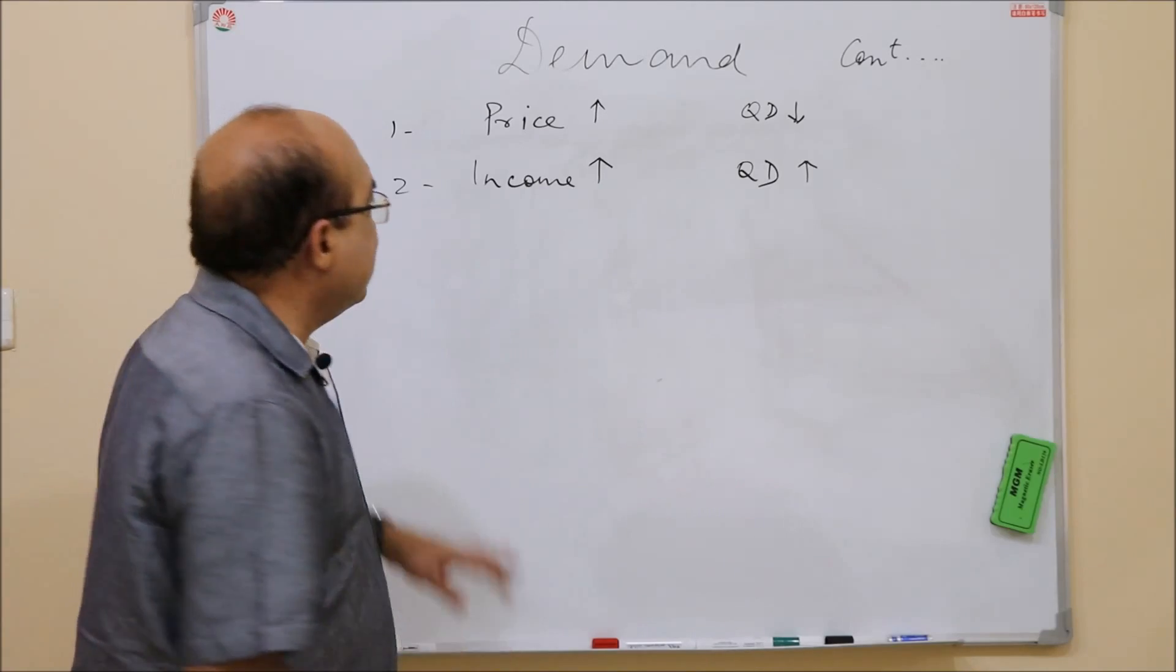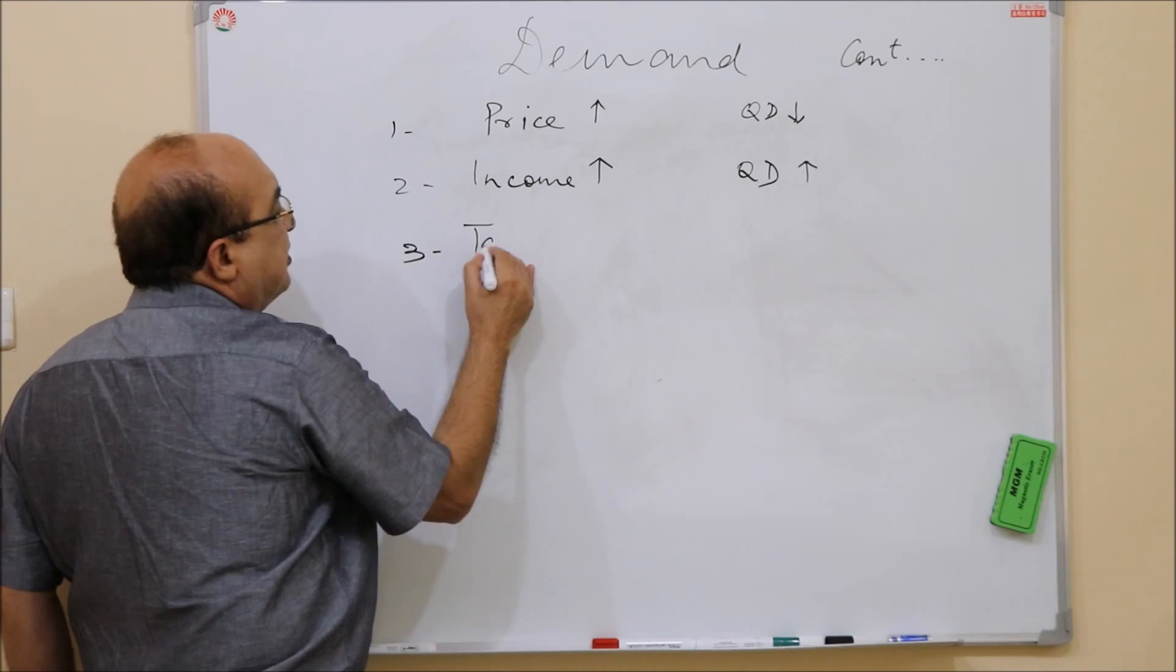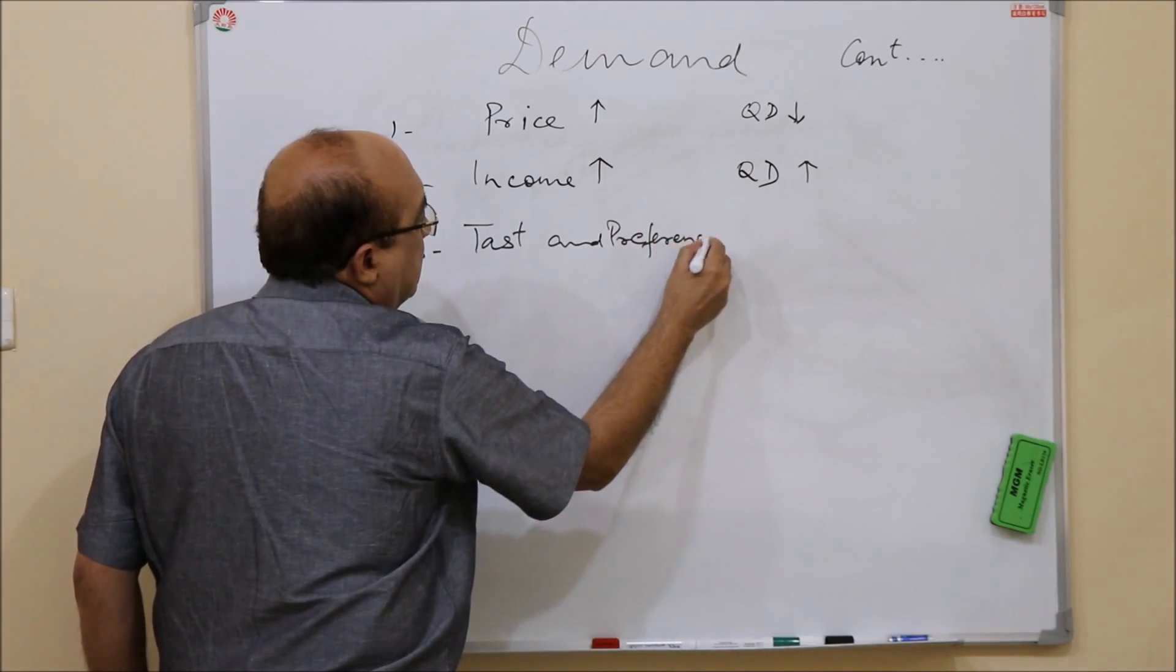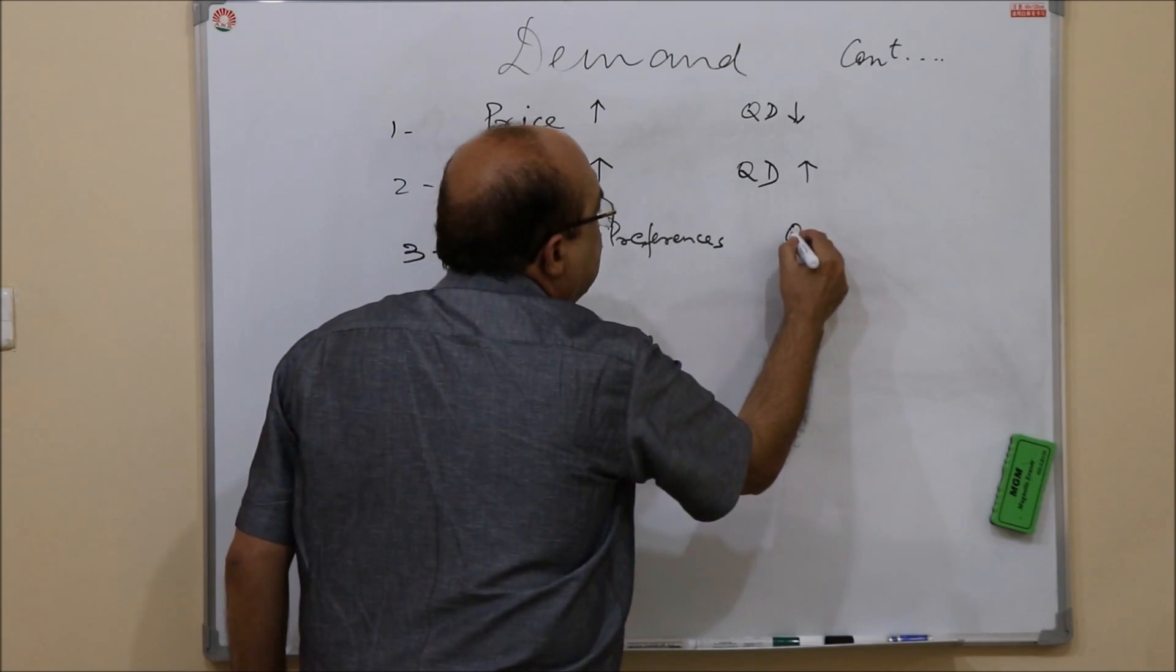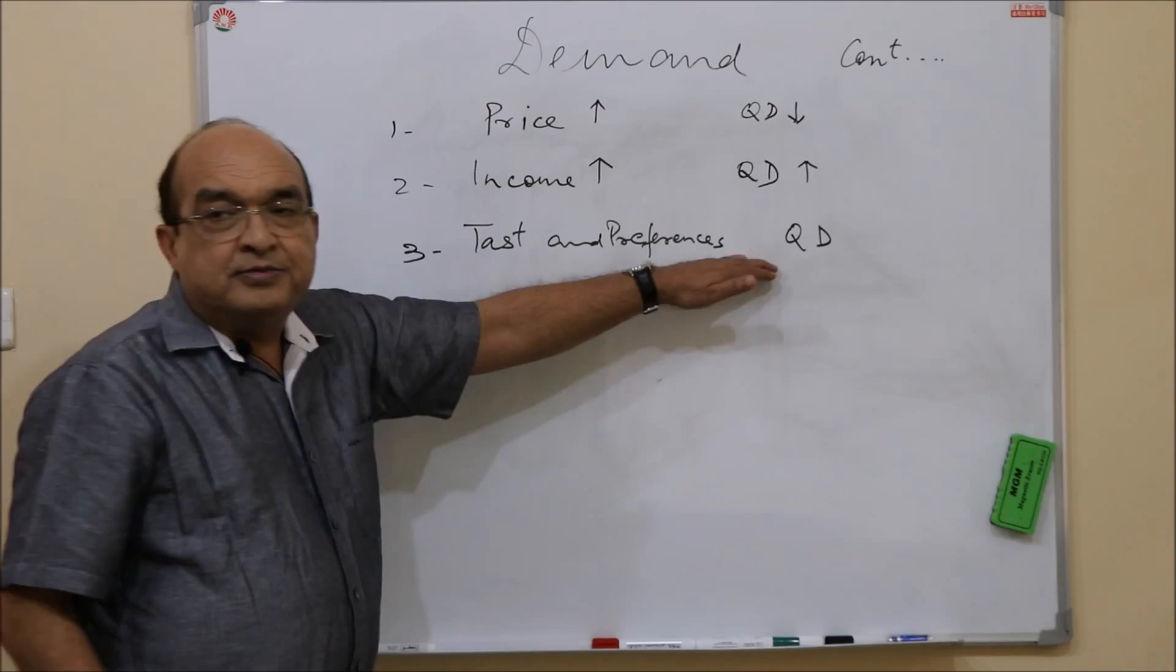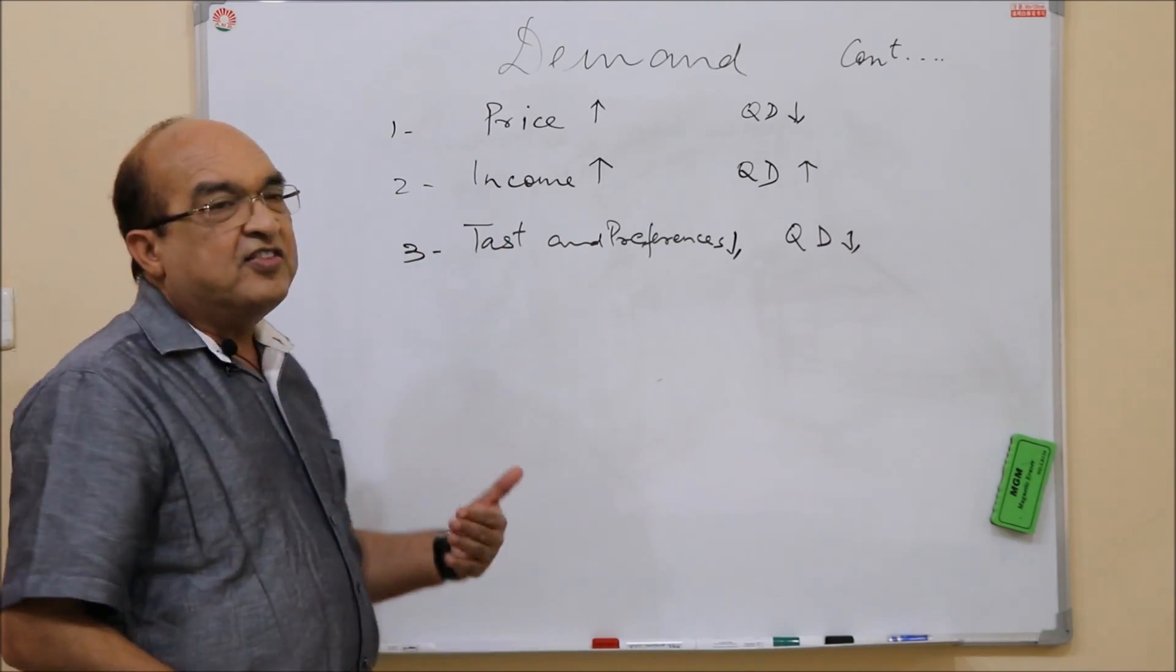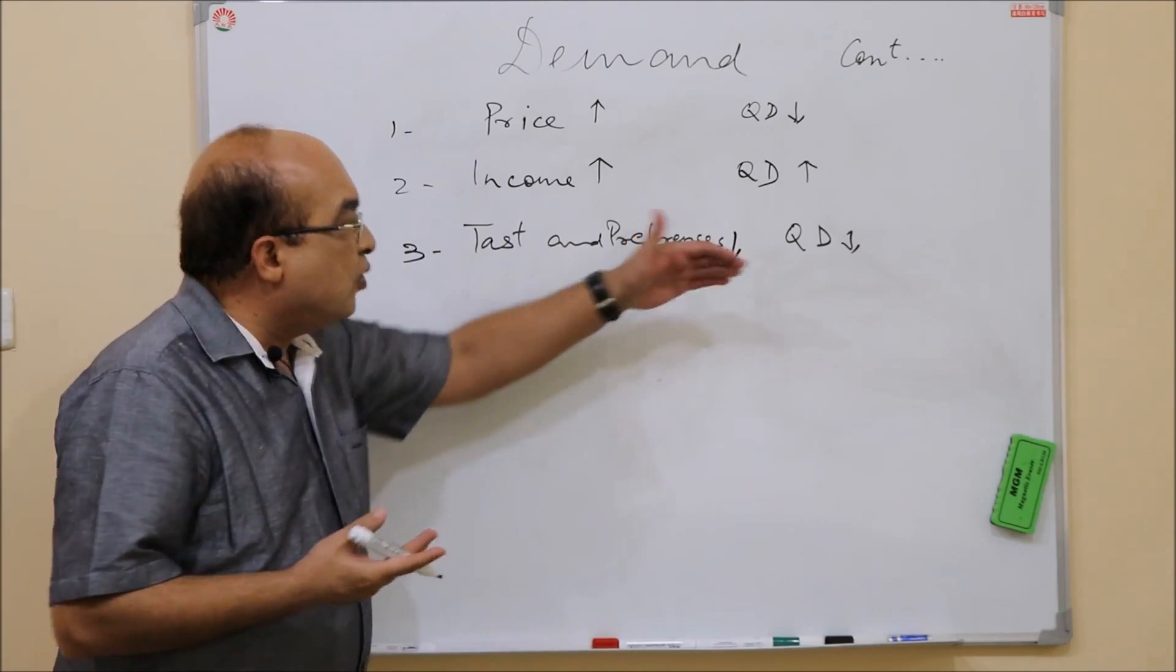Third, it could be taste and preferences. Taste and preferences also influence quantity demanded. If taste and preferences for the good decline, quantity demanded will decline. And if the taste and preferences change in favor of that commodity, quantity demanded of that commodity will go up.